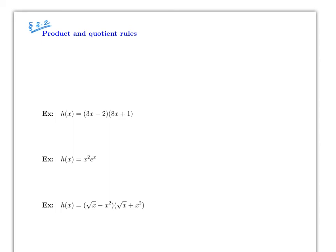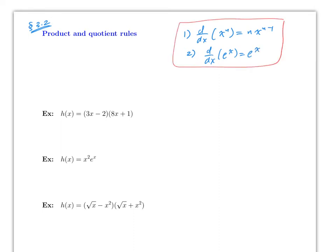Once you are familiar with the power rule formula — formula 1 — formula 2 for now will be the derivative with respect to x of e to the x is just e to the x. This one will get more interesting very soon. You technically have two rules to take derivatives, and you are going to be using them over and over.